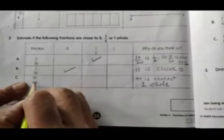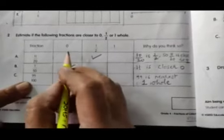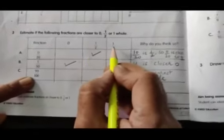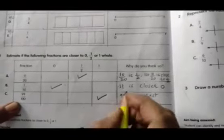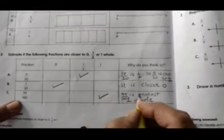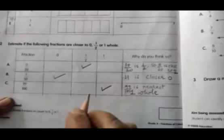Next C bit, 99 by 100. It is closer to 1. Because why? Only one part is left to one whole. So 99 is only one number is left for one whole. So 99 is nearest to one whole. 99 by 100 is nearest to one whole.